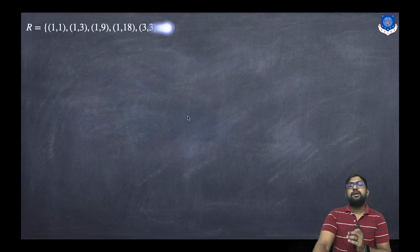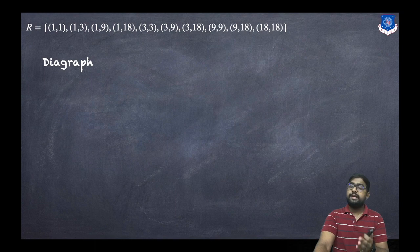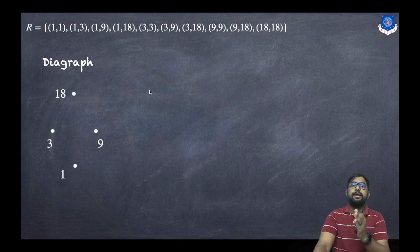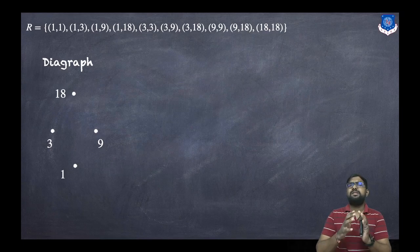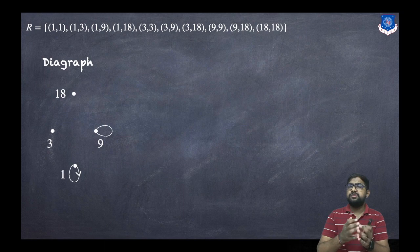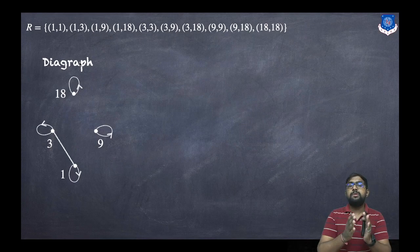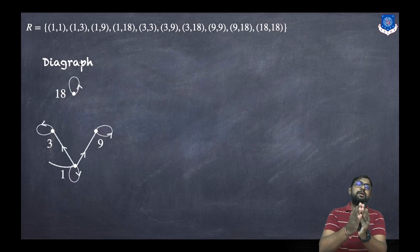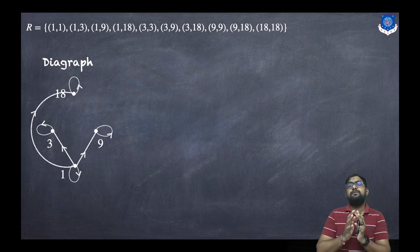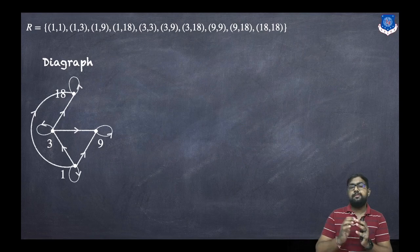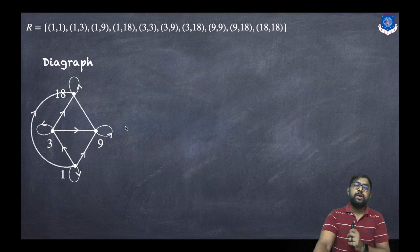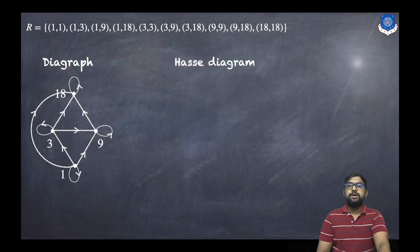Now we construct the digraph: draw points 1, 3, 9, and 18. Since every number divides itself, there are self-loops at each node. Then 1 is related to 3, 9, and 18, so those directed edges are added. Three is related to 9 and 18, so edges (3,9) and (3,18) are drawn. Finally, 9 is related to 18, so that edge is added.